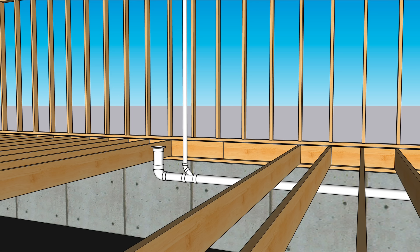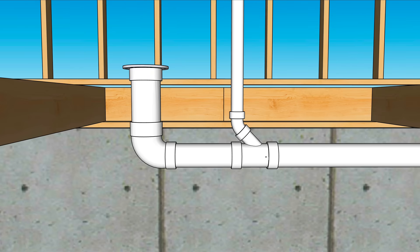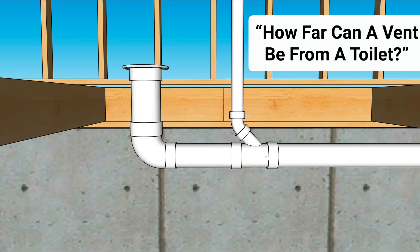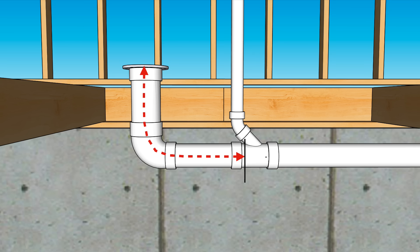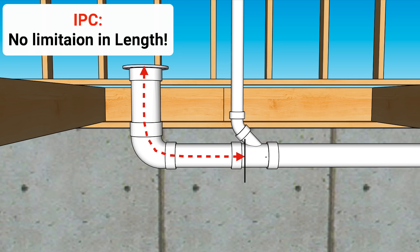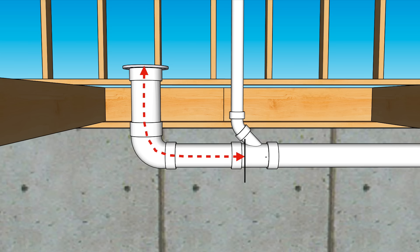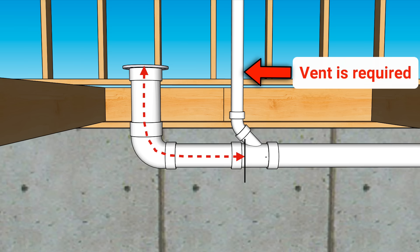How far can a vent be from a toilet? The answer depends on your local plumbing code. The toilet's trap arm — also referred to as the fixture drain — is the pipe between the trap and the vent. If you're in the IPC, there is no limitation in length for the toilet's trap arm. That means your fixture drain can have an unlimited distance. Your toilet still needs a vent, but your trap arm can be as long as you need it.